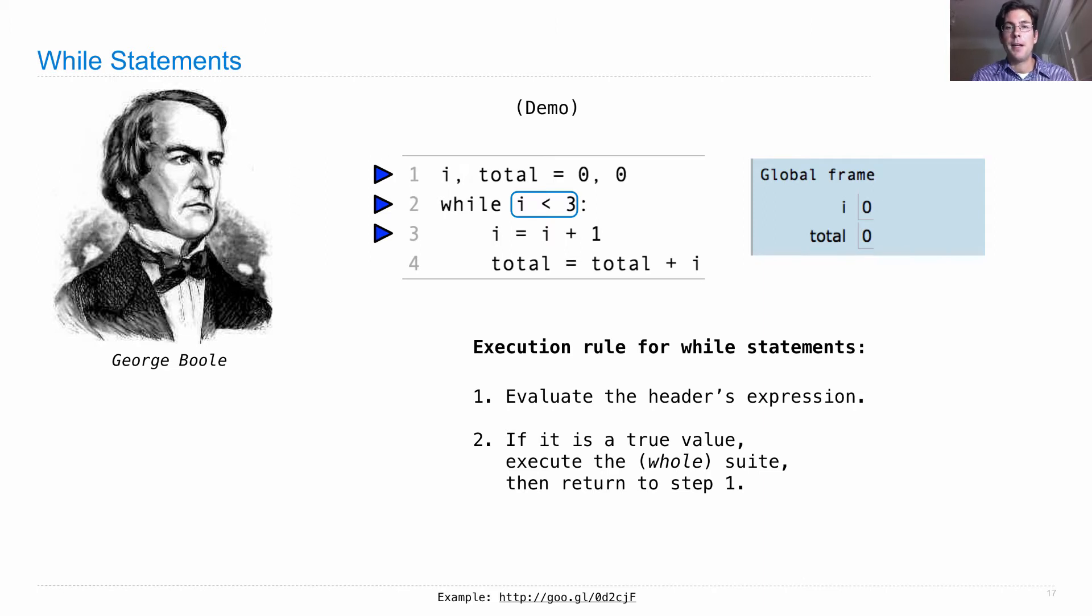The first line of the suite rebinds the name i to a new value i plus 1. The next line binds total to total plus i. Notice that i is 1 right now, total is 0, so total is rebound to 1. Then we return to step 1, that is we evaluate the header's expression again. Is i less than 3? It certainly is. Now i is i plus 1 and total is the current value of total, which is 1, plus i is 2, so now total will be bound to 3.